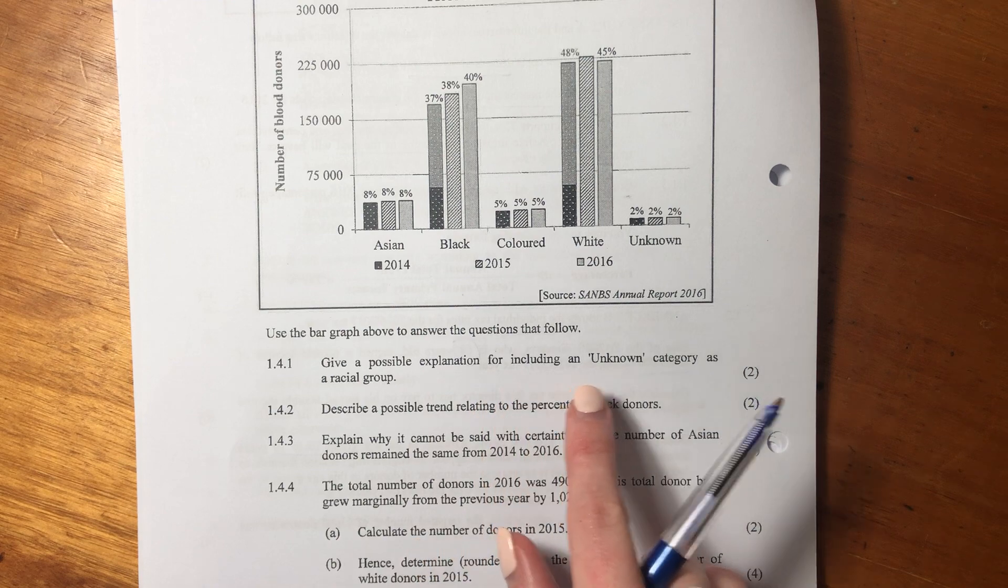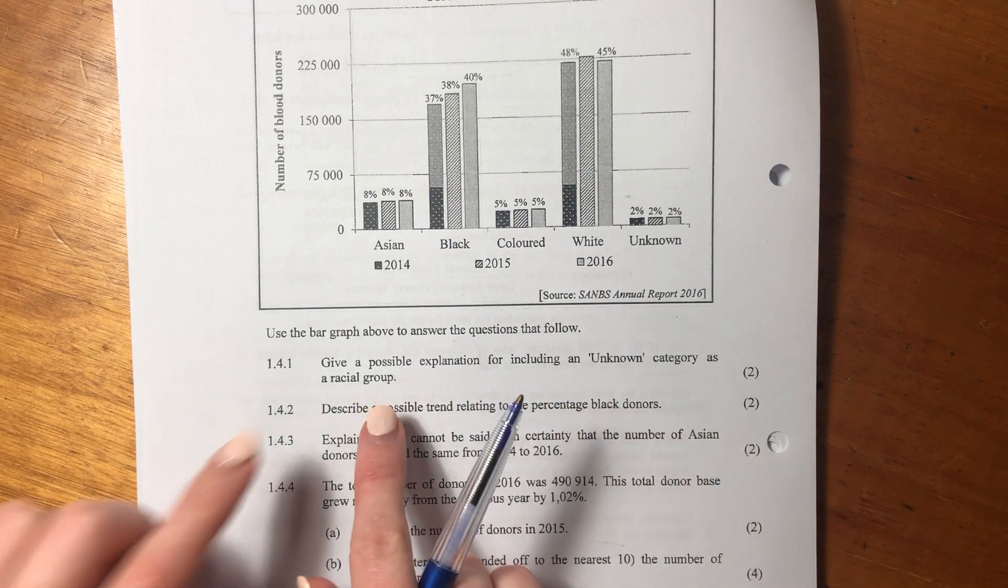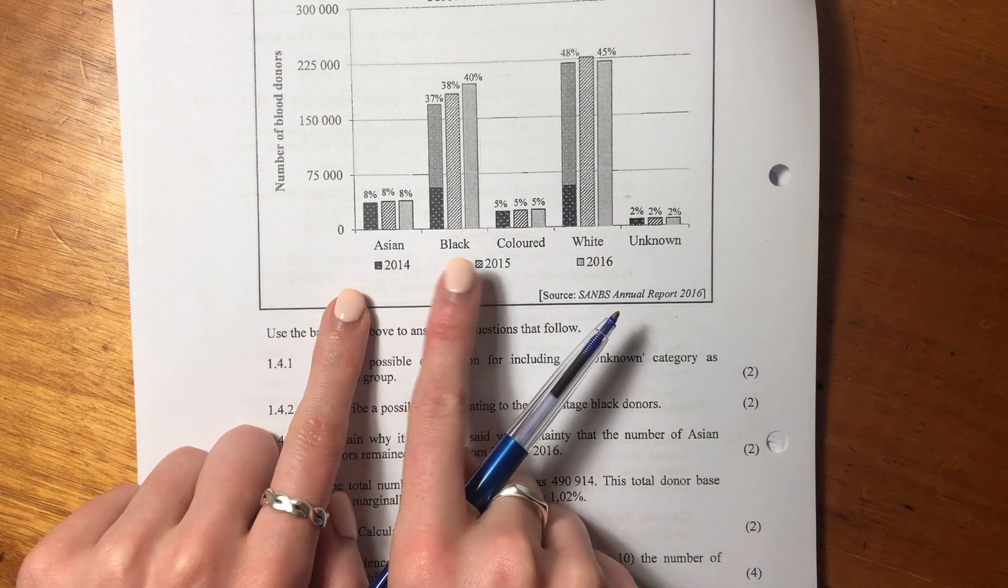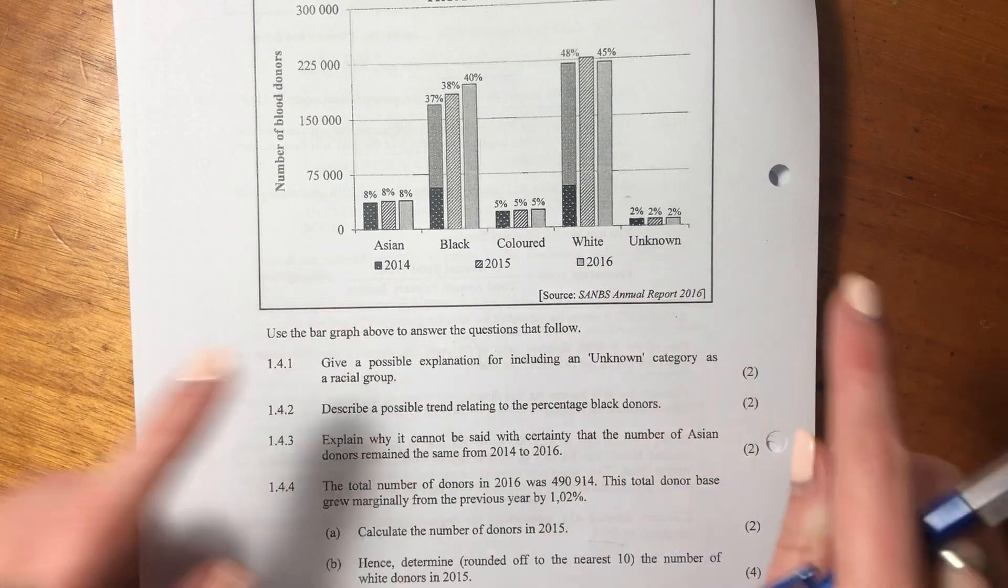Don't get so hung up on the information they give you, you forget to look at the questions. The questions often help you understand the scenario that's given. So let's look at what it says. Give a possible explanation for including an unknown category as a racial group, right? So we have Asian, black, colored, white, and unknown.